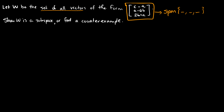We want to show W is a subspace of the vector space of vectors with three entries, so a subspace of R3. We have (C − A, A − 6B, 2B + A) and we want to make this a span of something.